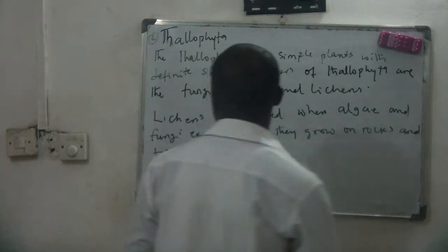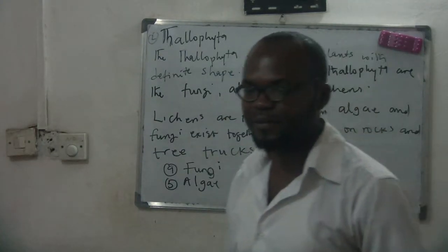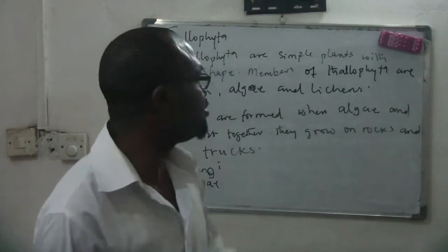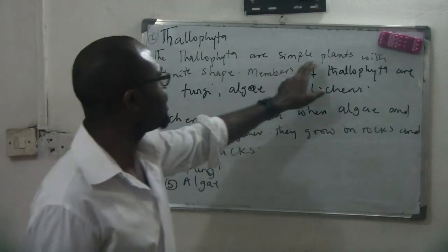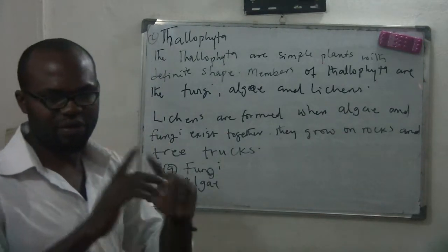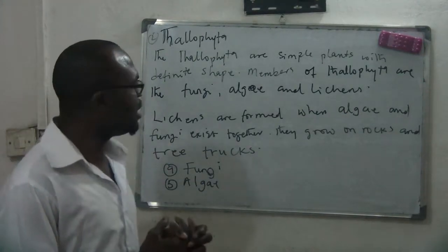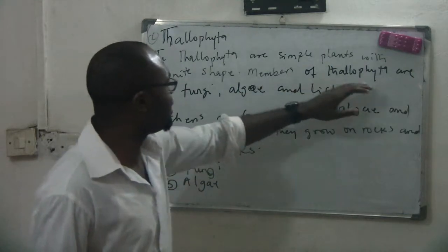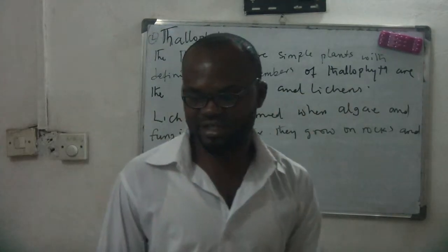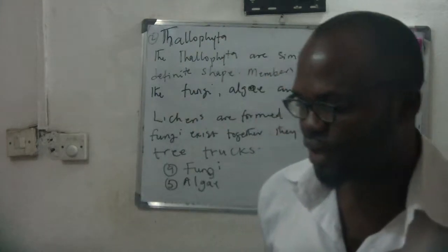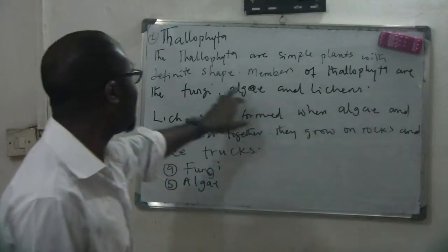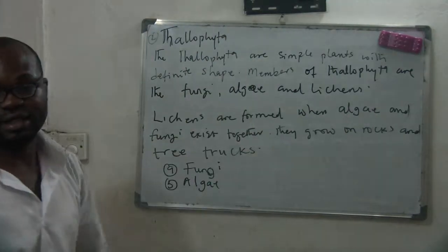The Talofaita are simple plants with definite shape — it could be oval or any kind of shape. Members of the Talofaita are the fungi, the algae, and the lichens.